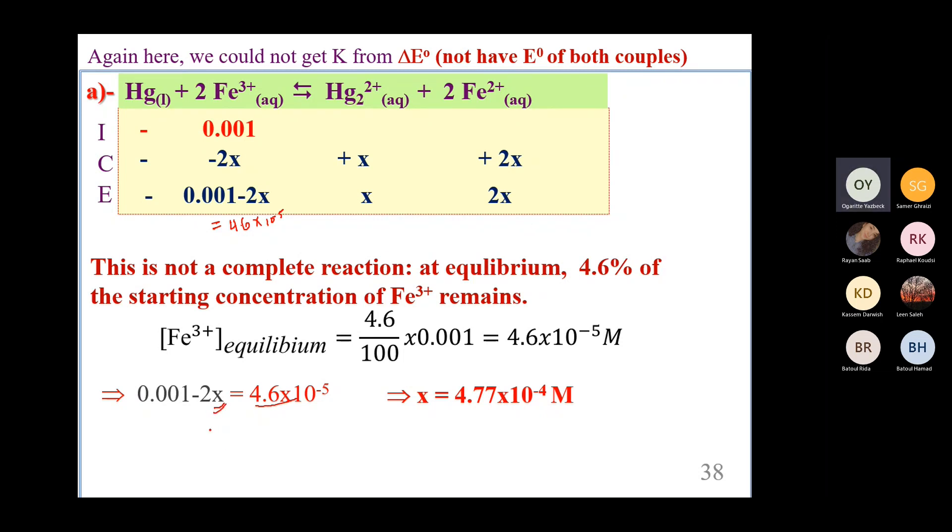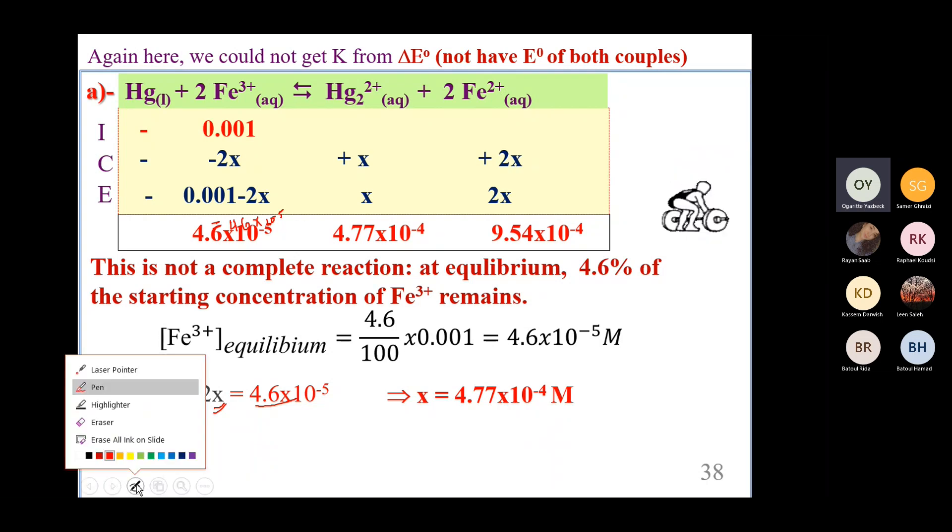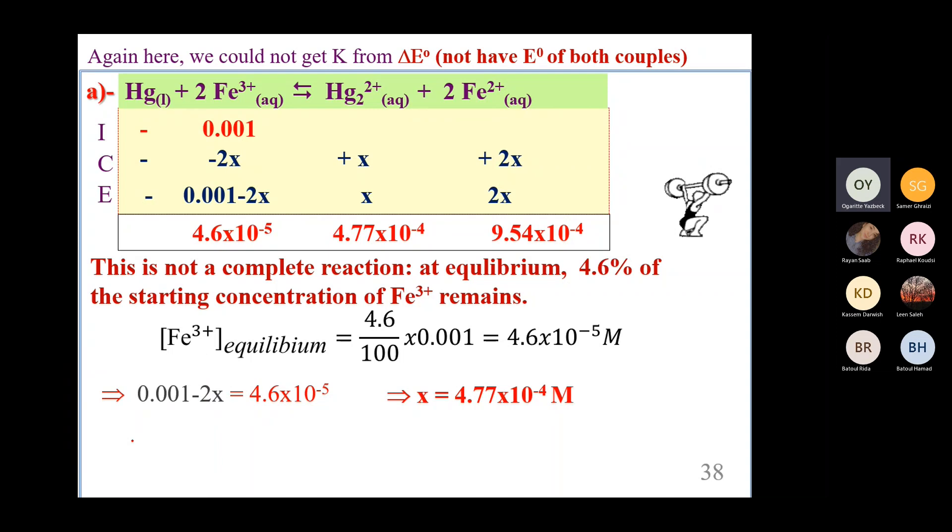So indeed, solve for the x, you get the x value. And once you have the x value, oh great. That means I have the concentration of every single species at equilibrium because I already have them in terms of x. So now I have the concentration of every species at equilibrium.